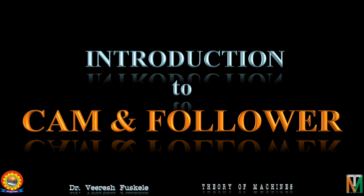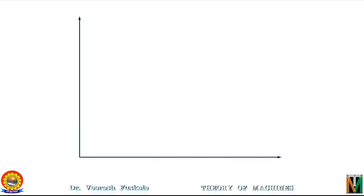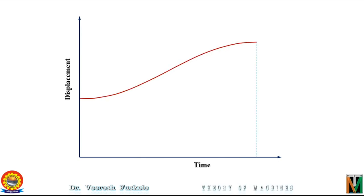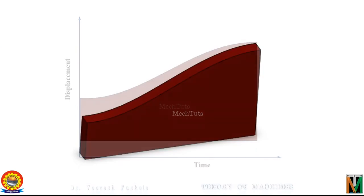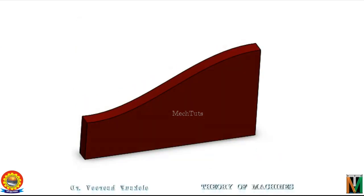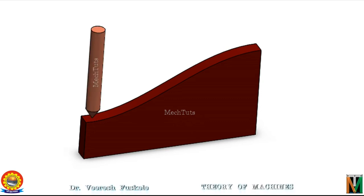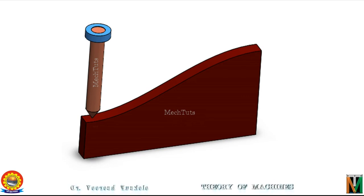The basic idea that we are going to use to solve these problems is very simple. Suppose we have been given a displacement against time graph which is to be achieved so that a machine part moves according to this function against time. What we do is we take this graph, we cut it on a thick metal plate, and then the part which is to be moved according to this function is made to rest on this profile and is constrained so that it moves only up and down in the vertical direction. Now, if we set this plate into uniform motion, the part resting on it will follow the displacement against time function we are trying to achieve.